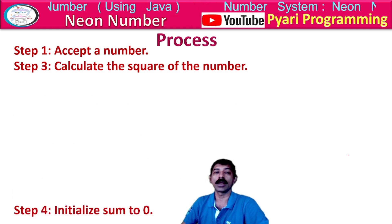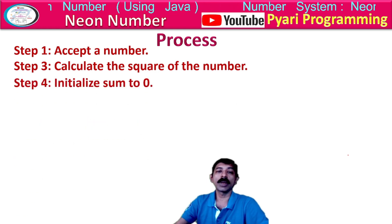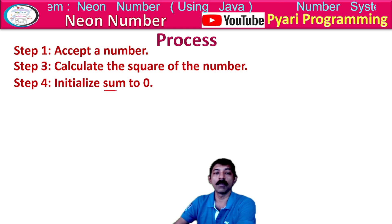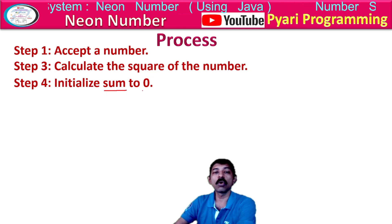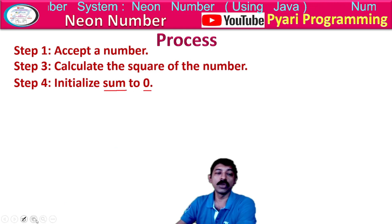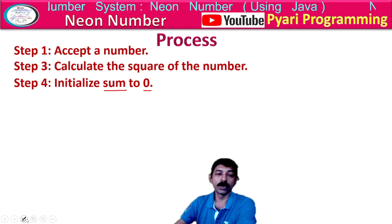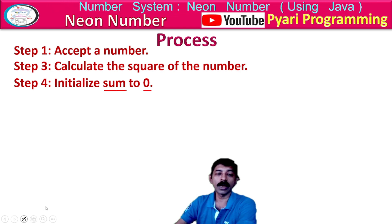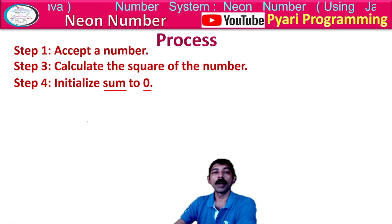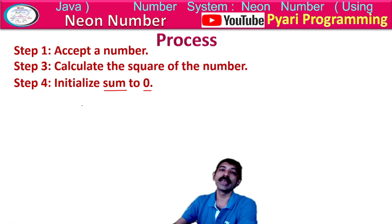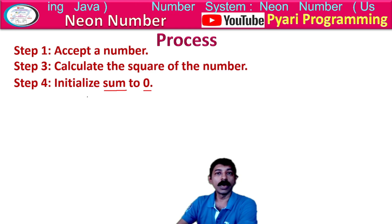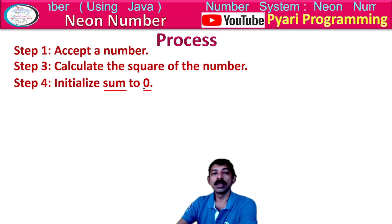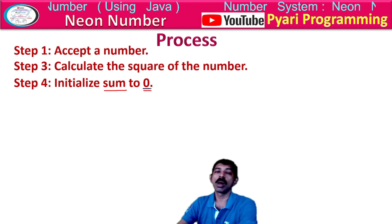After accepting the number, I will find out the square of the number. After that I will initialize sum to zero. Why initialize sum to zero? Because when we start the program, no digit has been extracted yet — so sum is obviously zero.